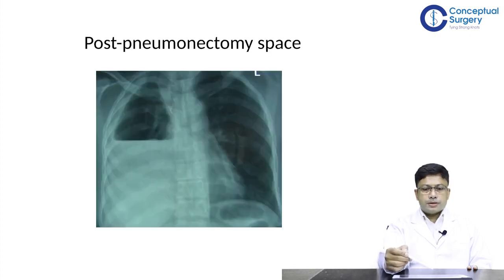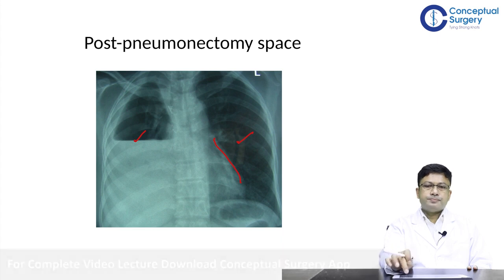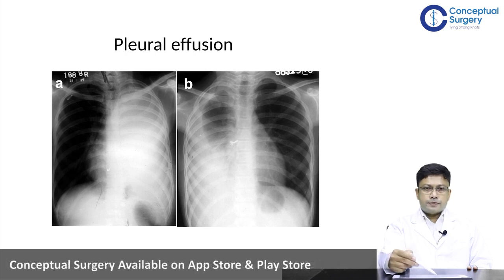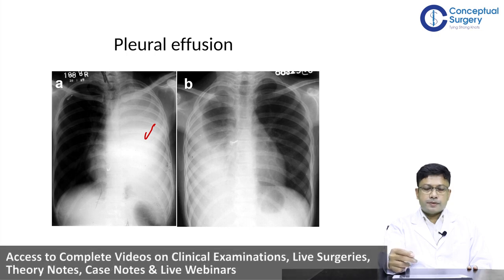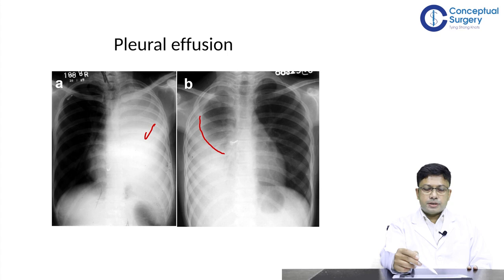This X-ray shows a hydropneumothorax on the right side with lung markings visible on the left. The mediastinal cardiac silhouette is shown here. This picture is typically seen in a post-pneumonectomy space where fluid gradually fills the cavity — a situation where a chest tube is not needed. Another PA projection shows a completely opaque left hemithorax from massive pleural effusion, and a second patient's X-ray shows a curvilinear upper border of pleural effusion on the right side. In cases of complete hemithoracic opacification, ultrasound is recommended to confirm the nature of the fluid collection.